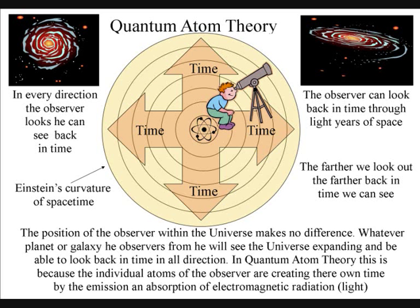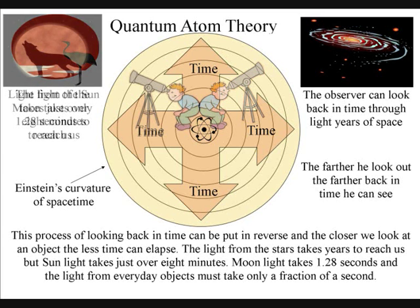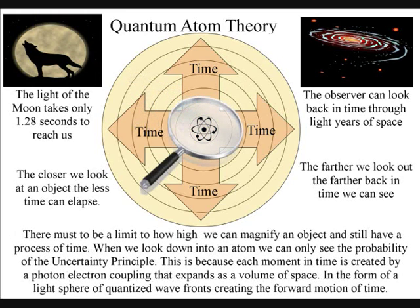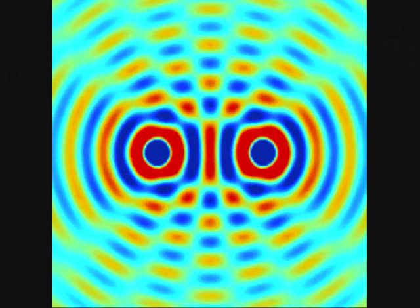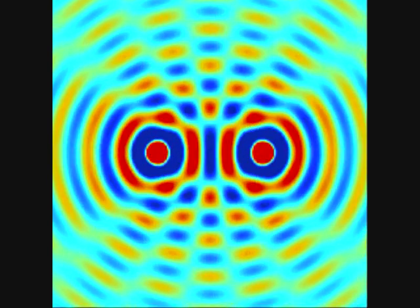This process of looking back in time can be put in reverse, and the closer we look at an object, the less time can elapse. The light from the sun takes just over 8 minutes to reach us, and moonlight takes 1.28 seconds. When we look down into an atom, we can see time-dependent quantum mechanics when the atoms bond together, forming interference patterns of their own.